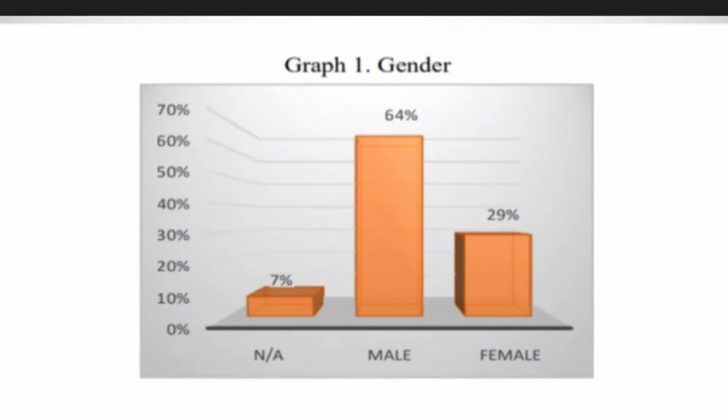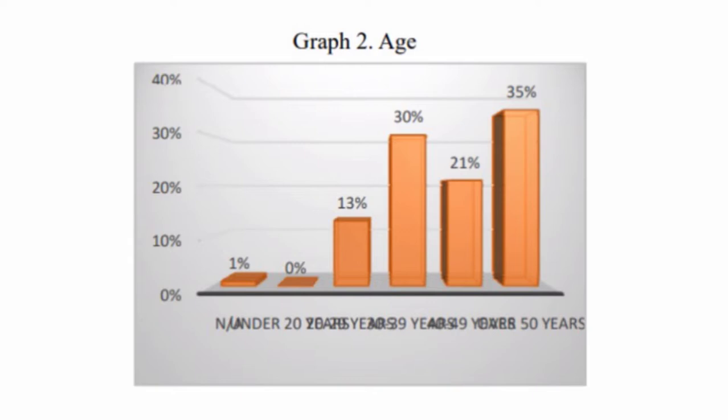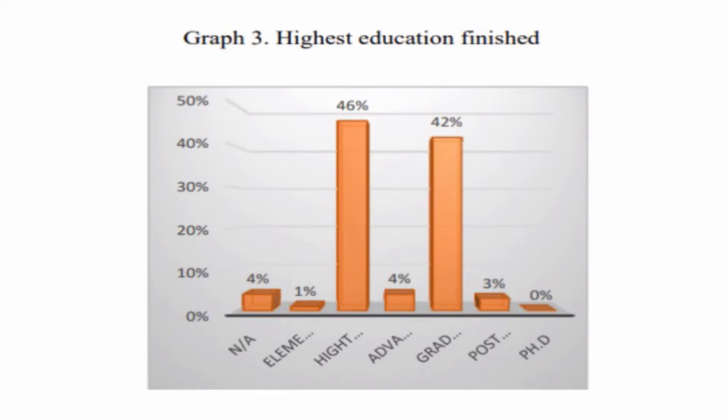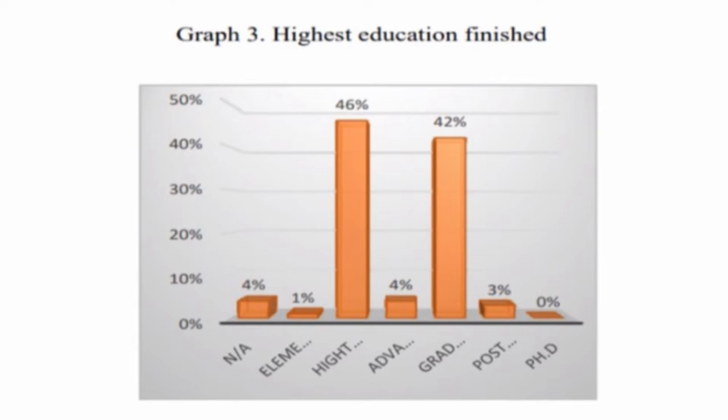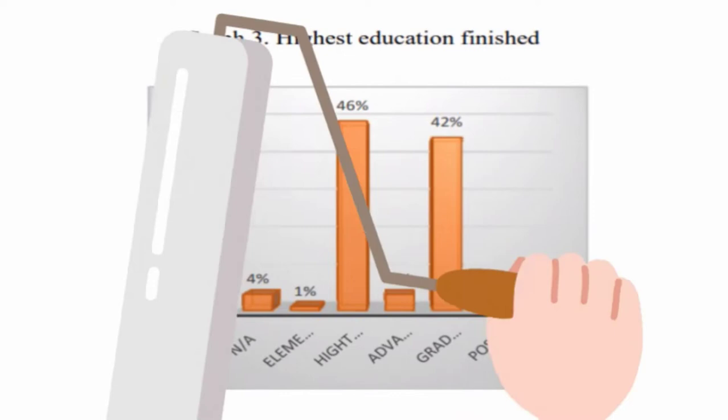Now let's jump on the findings of this study. Graph 1 shows that the participants in the survey were mostly males, at 64%. As presented in Graph 2, 35% of the survey participants are employees in the age of 50 years and above. From Graph 3, we can see that 46% of employees finished secondary school, and 42% of the employees have finished graduate studies. Here in Graph 4, we can see that 64% of survey participants have more than 8 years of experience in the company.